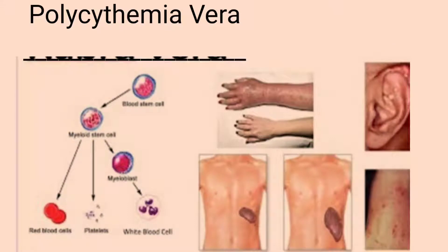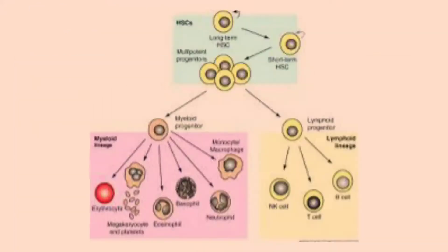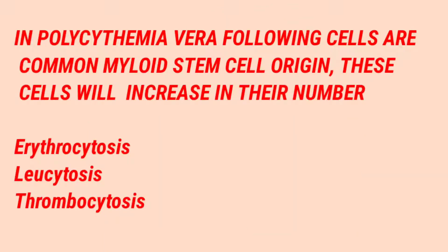In polycythemia, the defect is in the common myeloid progenitor. So from the common myeloid progenitor we have cells including myeloid blasts, basophils, neutrophils, eosinophils, monocytes, macrophages, erythrocytes, and thrombocytes — these are the cells affected in polycythemia.